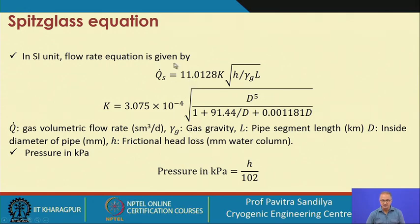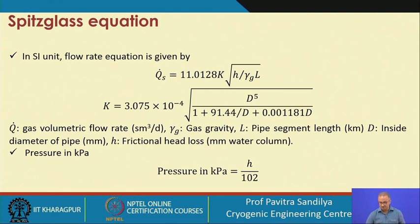If we find the value of H in terms of kilopascals: H in millimetres of water column divided by 102 gives the value in kilopascals. So we can also convert between kilopascals and millimetres of water column, or vice versa.